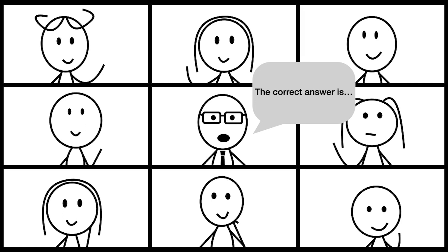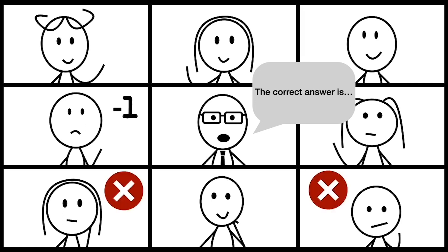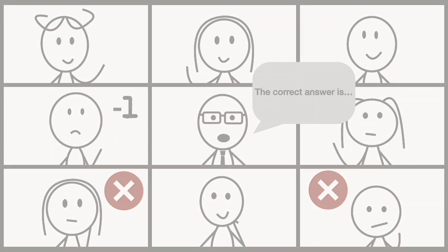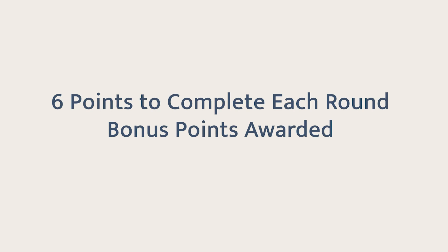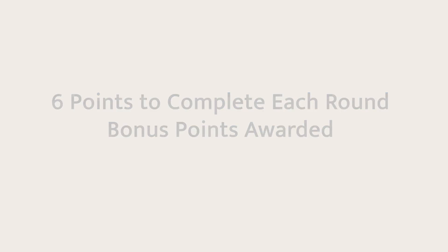However, if the third student buzzes in before the moderator has finished reading the whole question and gives the incorrect answer, that student will be deducted one point, so a player can end with a negative score for the round. Once a student reaches six points, they are done for that round, and students will receive bonus points depending on how fast they reach six points.